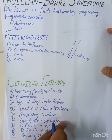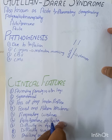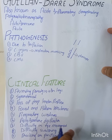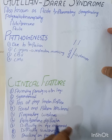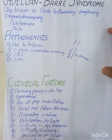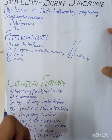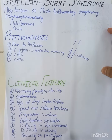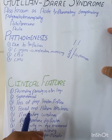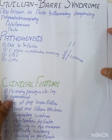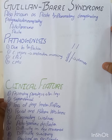Autonomic dysfunction can include decreased motility in the GIT, loss of bladder control, and difficulty in eye movement due to involvement of motor cranial nerves. There can also be difficulty in swallowing and paresthesia — a pins-and-needles or insect-crawling sensation — because some variants of Guillain-Barré syndrome involve sensory nerves. Painful conditions can also occur.